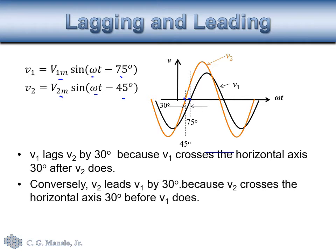Conversely, we can say that V2 leads V1 by 30 degrees, because V2 crosses the horizontal axis 30 degrees before V1 crosses the same axis.